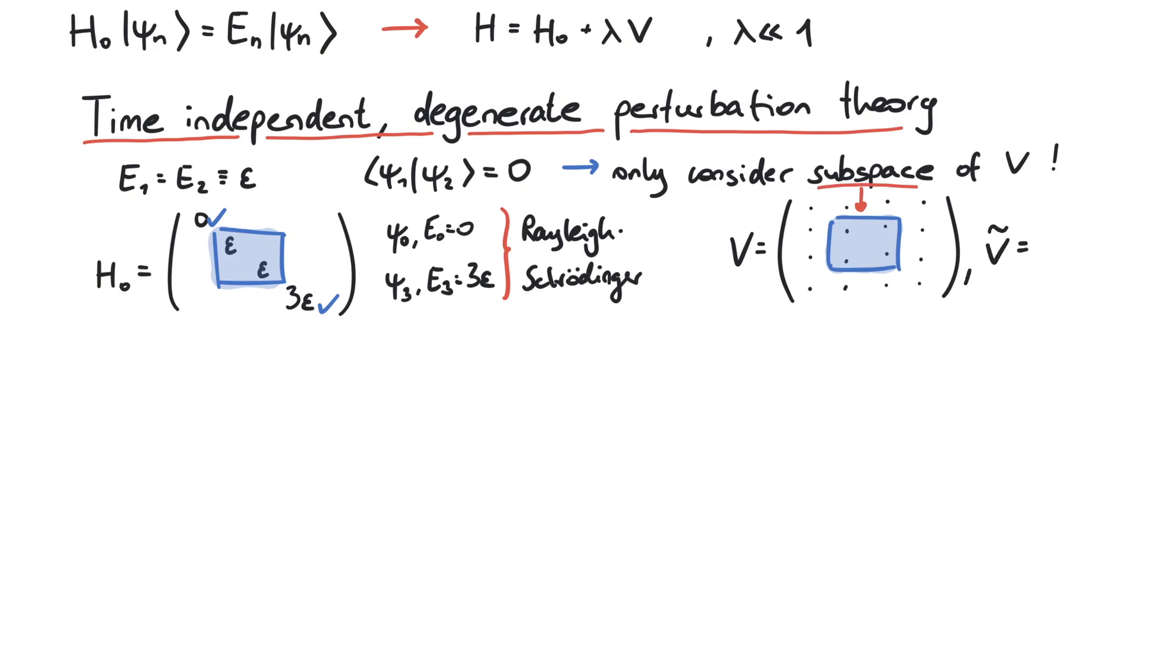We will use this potential to lift the degeneracy, and to do that, we solve its eigenvalue problem. This provides us with two eigenvalues and two corresponding eigenvectors. The eigenvectors can be used to construct the corrections to the eigenfunctions.